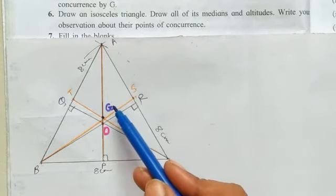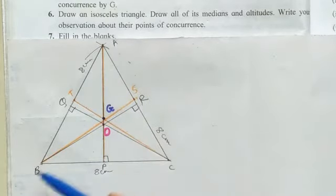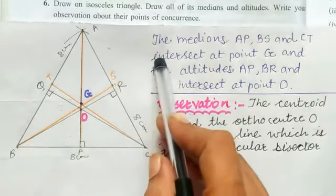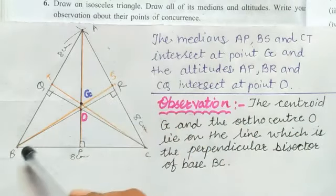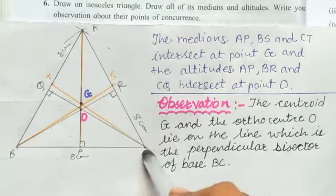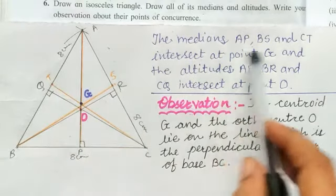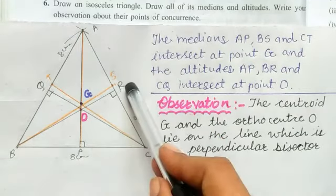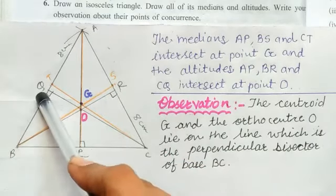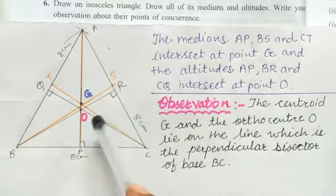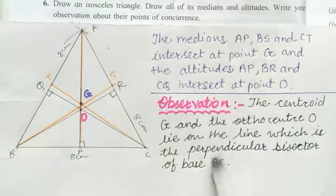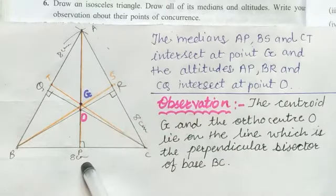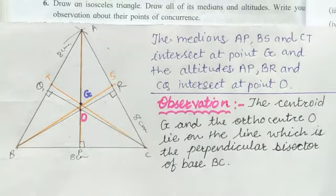So in triangle ABC we have orthocenter O and centroid G. The medians AP, BS, and CT intersect at point G, and the altitudes AP, BR, and CQ intersect at point O. The observation to write is: the centroid G and the orthocenter O lie on the same line, which is the perpendicular bisector of the base BC. You can take a screenshot to help write this in your notebook.